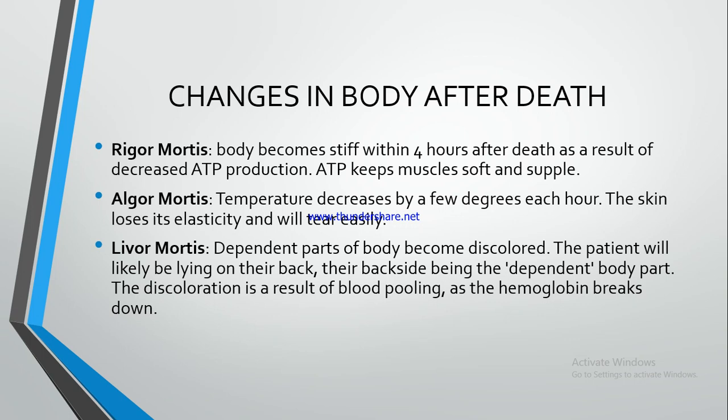Livor mortis. Dependent parts of the body become discolored. So livor mortis me kya hota hai ki jo dependent part hai body ke, woh discolored ho jati hai. Wahan pe pooling hone lagti hai blood ki — blood ek jagah jamah hone lagti hai. The patient will likely be lying on their back, their backside being the dependent body part. The discoloration is the result of blood pooling as the hemoglobin breaks down. Jo dependent part hota hai body ka, wahan pe discoloration hone lagti hai. So that is livor mortis.